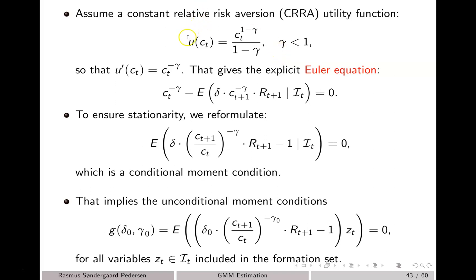Given this particular choice of utility function, we end up with the following Euler equation. Note that typically in time series analysis, consumption over time is a non-stationary process. So in order to impose stationarity, we consider the growth rate instead. We divide by ct to the power of minus gamma and obtain the following equation. The series rt plus 1 and ct plus 1 divided by ct are both stationary, and hence we should be able to use GMM estimation theory to carry out valid inference.